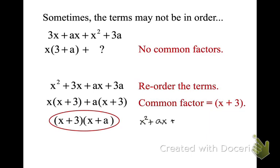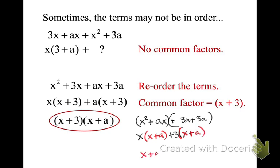Had I done it the other way — x squared plus ax plus 3x plus 3a — factoring out an x leaves x plus a, and factoring out a positive 3 also leaves x plus a. So we factor out our common binomial x plus a, and what's left is x plus 3. Just put the terms in an order where you can group two at a time and see if it works.